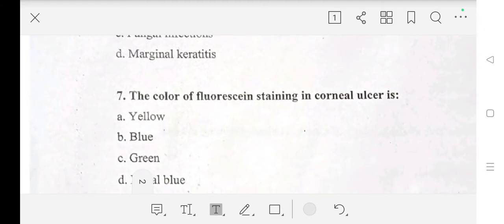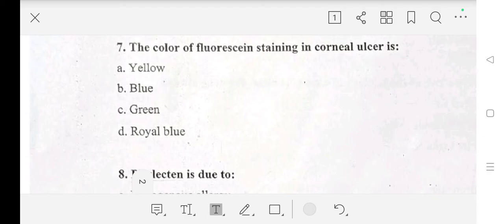The color of fluorescent staining in corneal ulcer is yellow, blue, green, or royal blue? Answer is green.